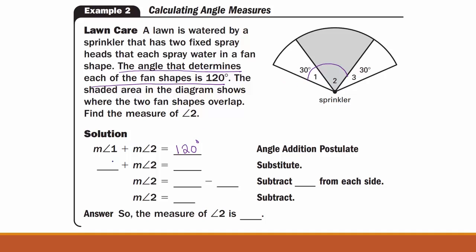Now, I'm given the measure of angle 1, that's 30 degrees. I know that the measure of angle 1 plus the measure of angle 2 is 120 degrees. I can solve for the measure of angle 2 by subtracting 30 on each side, and 120 minus 30 gives me 90 degrees. So, the measure of angle 2 is 90 degrees.